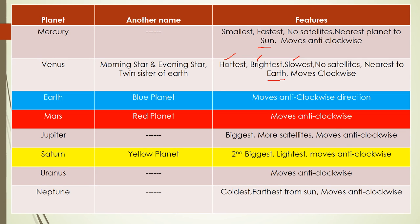The next planet is Earth. It is also called as the blue planet — I have marked the column in blue color for easy remembrance. Earth moves in anti-clockwise direction. The fourth planet is Mars. It is also called as the red planet and it also moves in anti-clockwise direction.